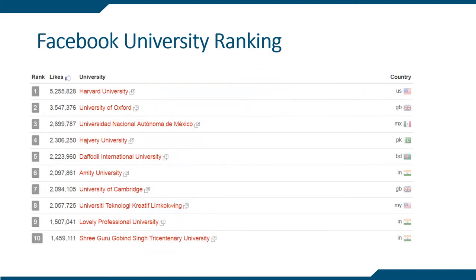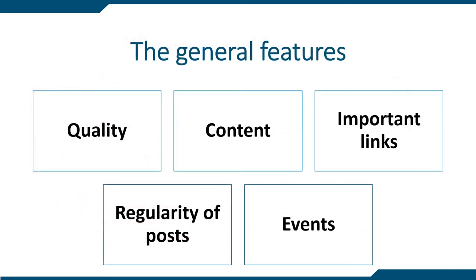We have focused our analytical review on the three leading educational brands' social channels: Harvard University, the University of Oxford, and the National Autonomous University of Mexico. The diagrams show the most popular Facebook pages of universities. The successful public pages of Harvard University, the University of Oxford, and the National Autonomous University of Mexico have the following positive characteristics.